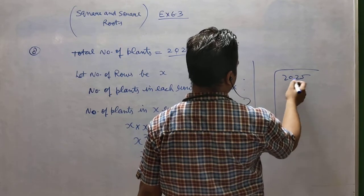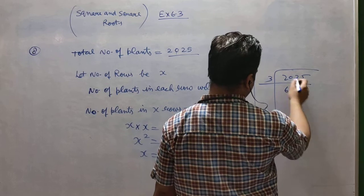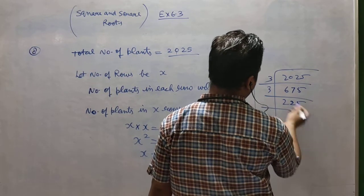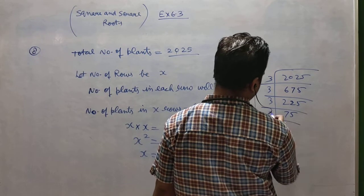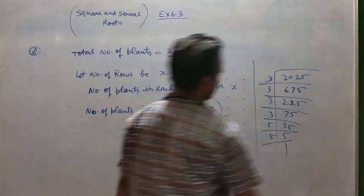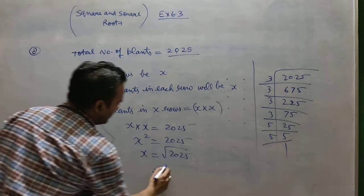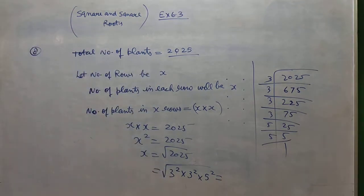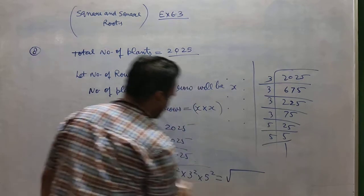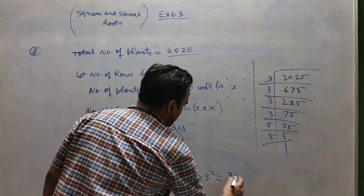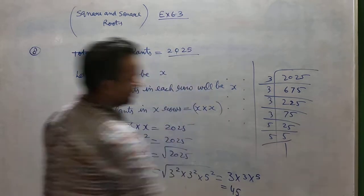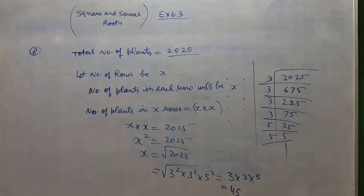The prime factorization gives 3×3×3×3×5×5, which is 3²×3²×5². Taking the root part — since the square root cancels the squares — we get 3×3×5 = 45. So there are 45 rows and 45 plants in each row.